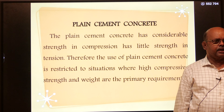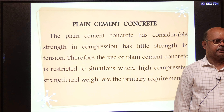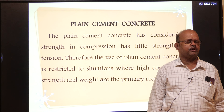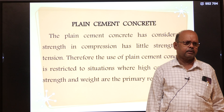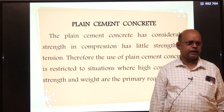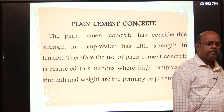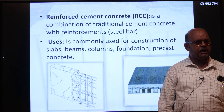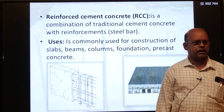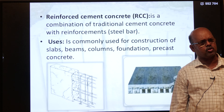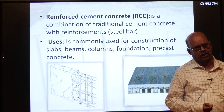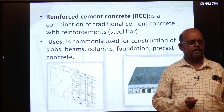Plain cement concrete is strong in compression but it is not showing strength in tension. In order to compensate, we make use of reinforced cement concrete, in which steel is introduced into the concrete. RCC has ingredients: sand, coarse aggregate, water, cement along with steel, which is strong in tension. So RCC provides better strength in both tension and compression, making it a good option.